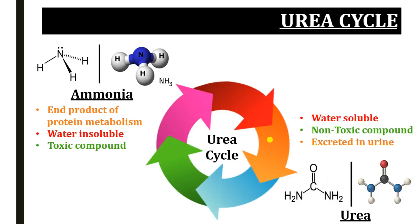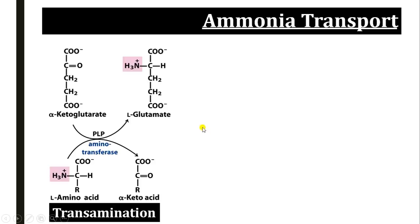Let's see where this ammonia comes from before the urea cycle. Whenever we take any protein in the diet, it will be digested into amino acid molecules and absorbed in the form of amino acids. These amino acids will be transported to the body tissues and utilized for metabolism. The first step for amino acid utilization is removal of the amino group from an amino acid.